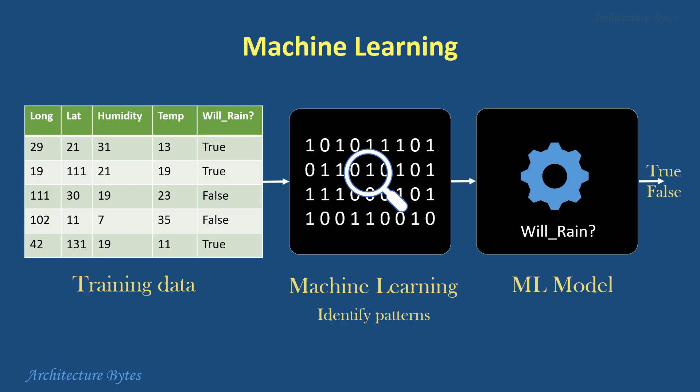In other words, it figures out whether for a certain combination of values of the feature set, will rain would be true or false. For example, when temperature is low and humidity is high, will rain would be true. In general, the larger the training dataset, the better the learning, and therefore the more accurate the prediction.